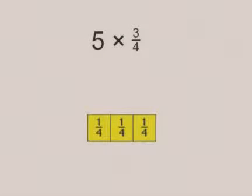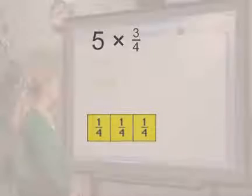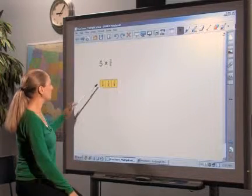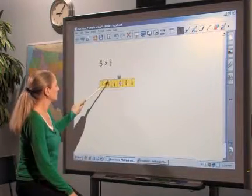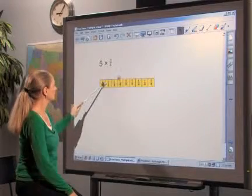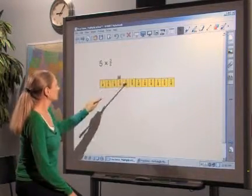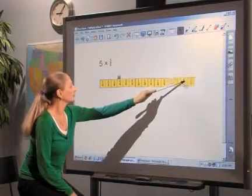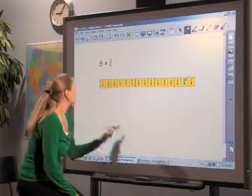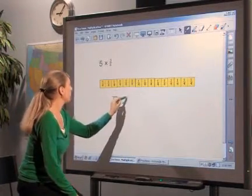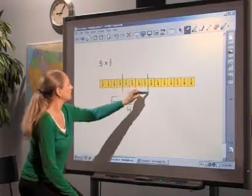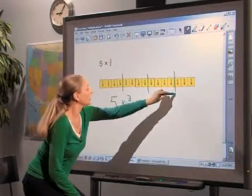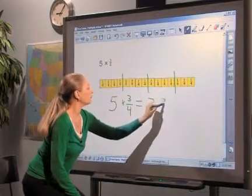Using combining equal groups as an interpretation of multiplication, students can show 5 groups of 3/4, or 5 times 3/4, and use the models to determine the answer. 5 times 3/4 is one, two, three and three-fourths.